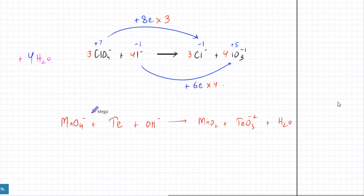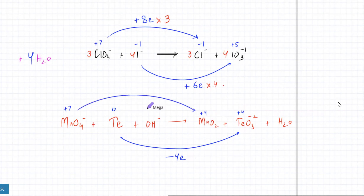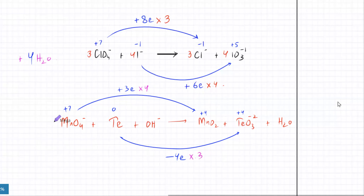What is the oxidation state of Mn here? It's plus 7. Te is obviously 0. O is minus 2, H is plus 1. Now Te goes from 0 to plus 4, so it lost 4 electrons. MnO2 goes from plus 7 to plus 4, so that's a gain of 3 electrons. So this should be multiplied by 4 and the other one by 3 — there should be 4 Mn's and 3 Te's. The number of electrons gained and lost are now balanced.